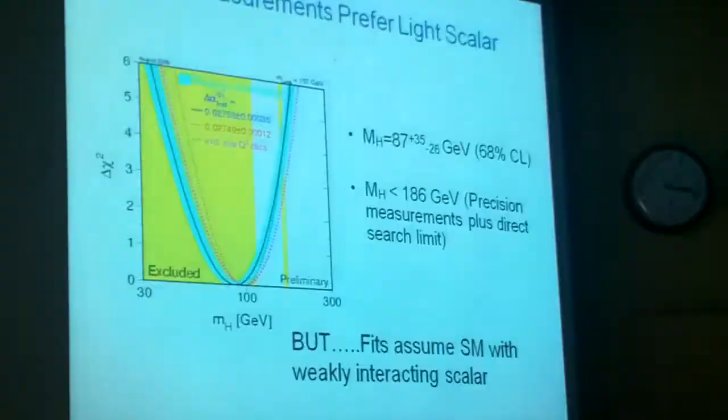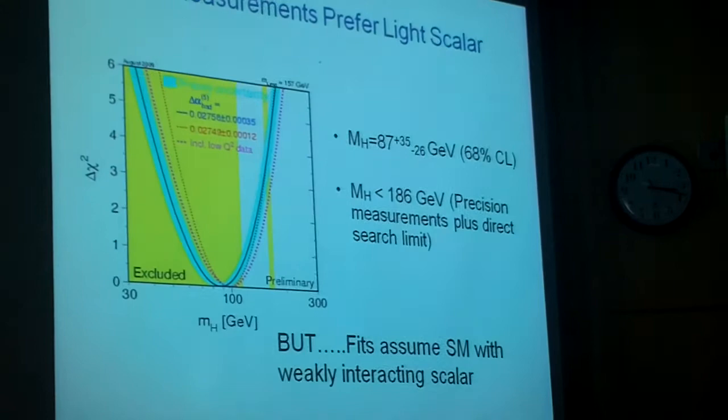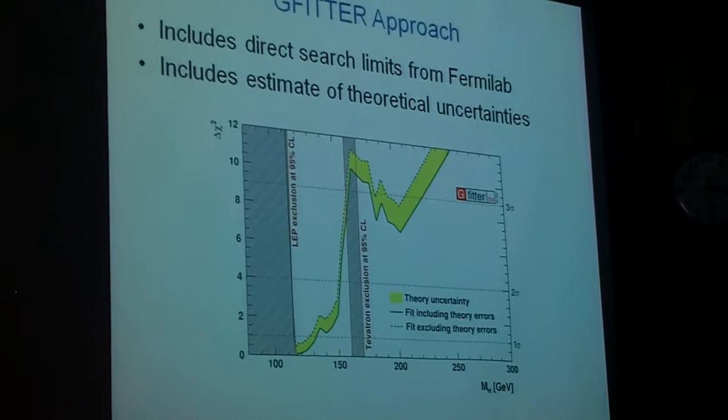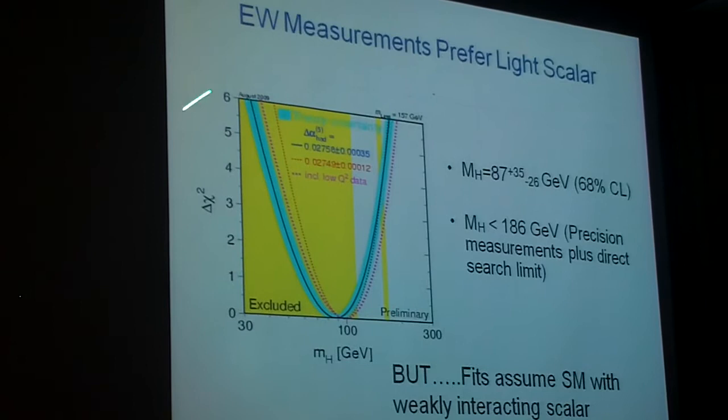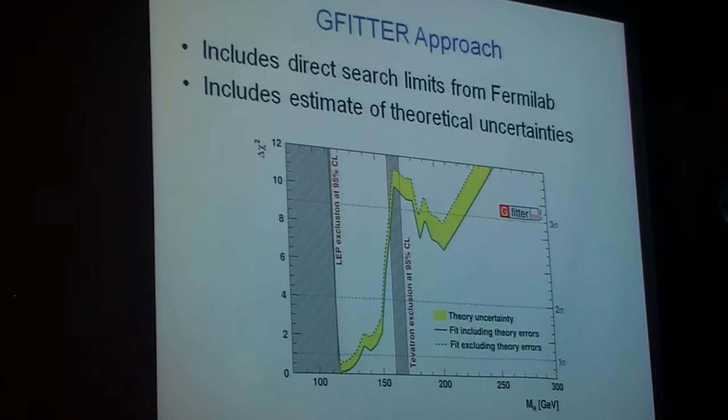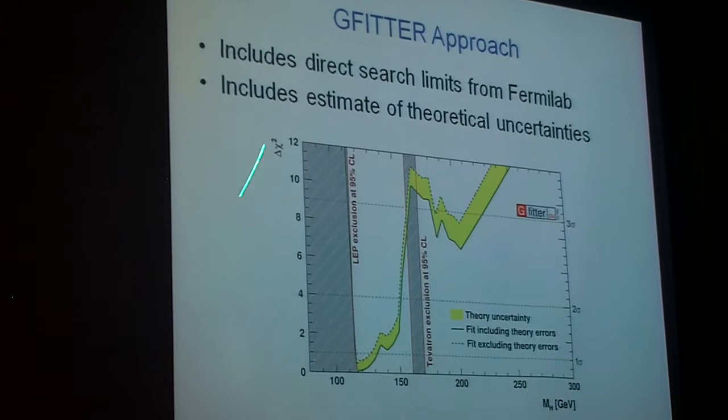There's been another set of people who are doing fits to all this data. This fit here is from the LEP Electroweak Working Group. The GFitter group is the group that brought you SFIT or CKM Fitter. They do a lot of fits to data. So this is an independent approach, a chi-squared fit as a function of the scalar mass. And this yellow curve here looks pretty much like the curve on the previous page.